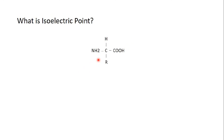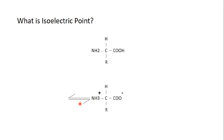An amino acid has an amino group, a carboxyl group, and a side chain. Both the amino and carboxyl groups can be either protonated or deprotonated. In lower pH — acidic pH — we have a lot of hydrogen ions (protons) in the solution, and both the carboxyl and the amino group will be protonated.